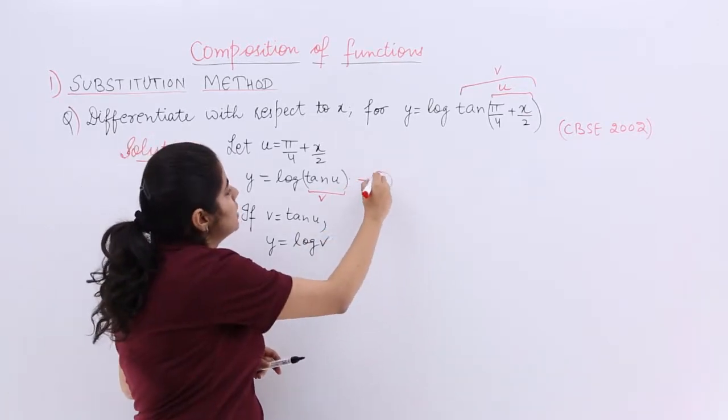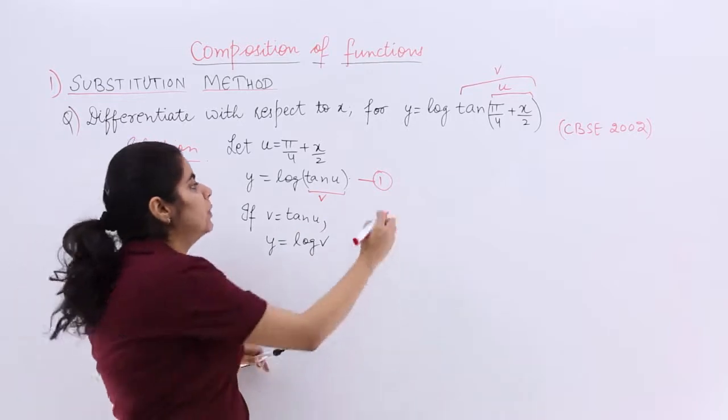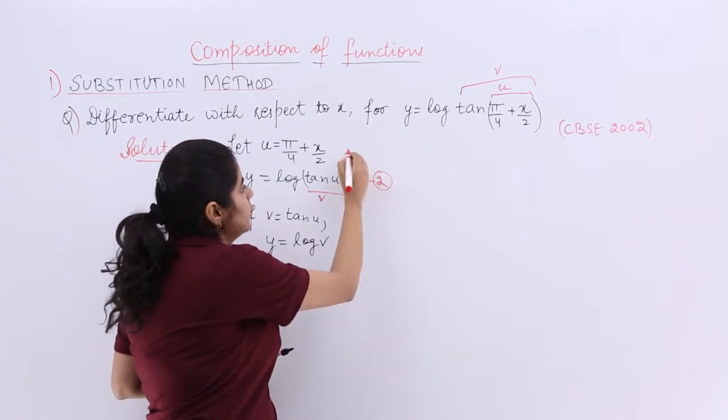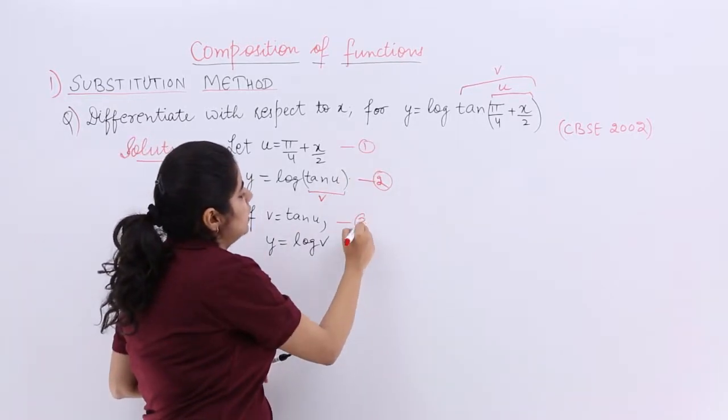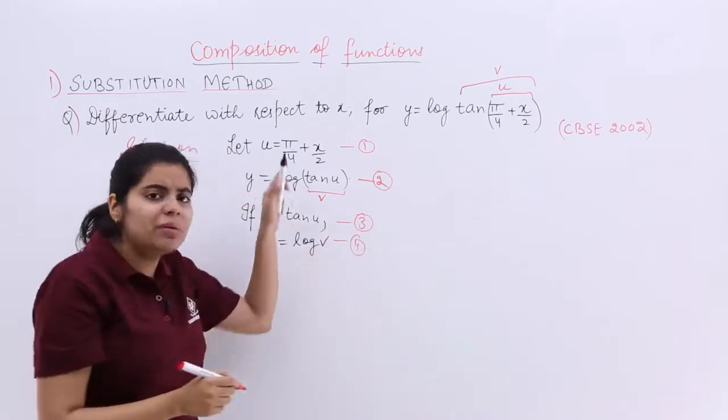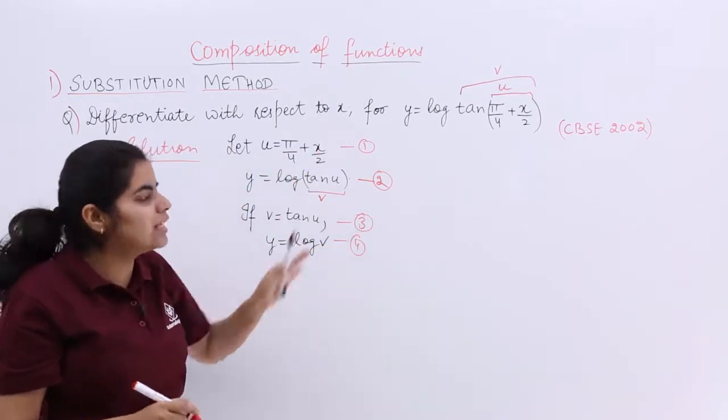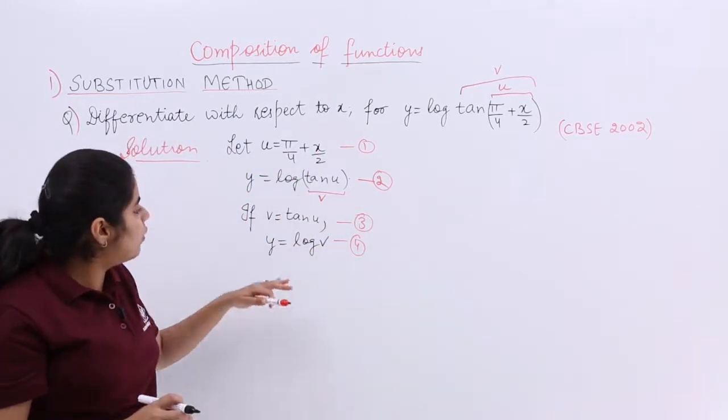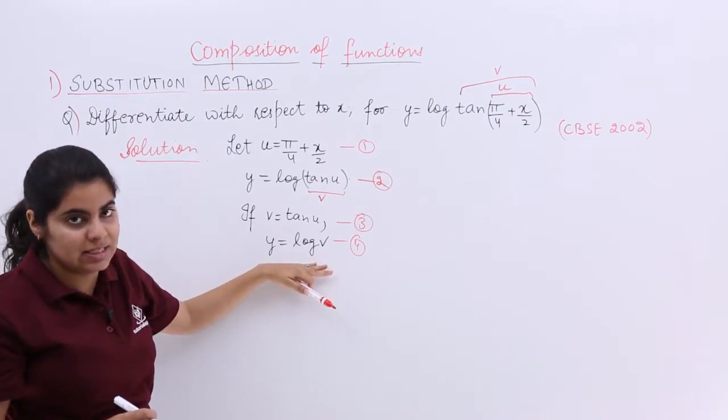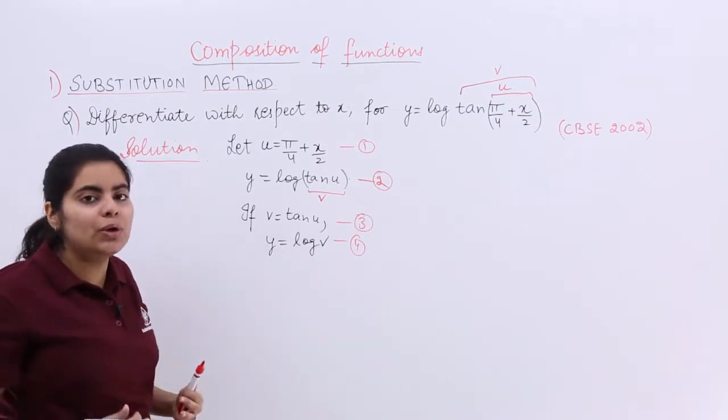So there are some substitutions. This is equation number 2. Let me name it. This is 1, this is 3, this is 4. Because we may be needing them again and again. So let's name them. So now we have the final as this. And the motto is what?